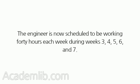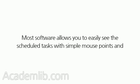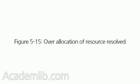Notice that this solution makes the utilization of our engineer much better. The engineer is now scheduled to be working 40 hours each week during Weeks 3, 4, 5, 6, and 7. Using the resource histogram is quite easy. Most software allows you to easily see the scheduled tasks with simple mouse points and clicks, as shown in Figure 5-15 — over-allocation of resource resolved.